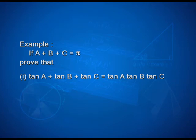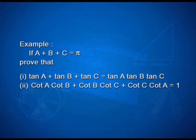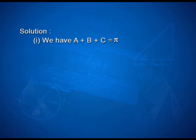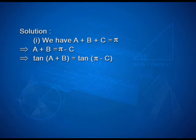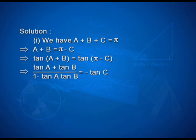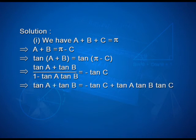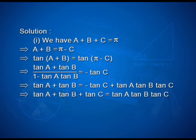Example: if A plus B plus C equals pi, prove (i) tan A plus tan B plus tan C equals tan A · tan B · tan C, and (ii) cot A cot B plus cot B cot C plus cot C cot A equals 1. Since A plus B plus C equals pi, A plus B equals pi minus C, so tan(A+B) equals tan(pi minus C) equals minus tan C. Using the addition formula: (tan A plus tan B)/(1 minus tan A tan B) equals minus tan C. Cross multiplying: tan A plus tan B equals minus tan C plus tan A tan B tan C. Rearranging: tan A plus tan B plus tan C equals tan A · tan B · tan C.